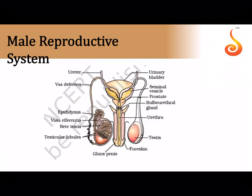In the diagrammatic representation of the male reproductive system, the testis is located in the scrotum. In sectional view, the testis is divided into 200 to 250 testicular lobules containing seminiferous tubules. The seminiferous tubules open into a network called the rete testis, which opens out into the vasa efferentia. The vasa efferentia drain into a single, highly coiled tube about six meters long called the epididymis, located at the back of the testis.